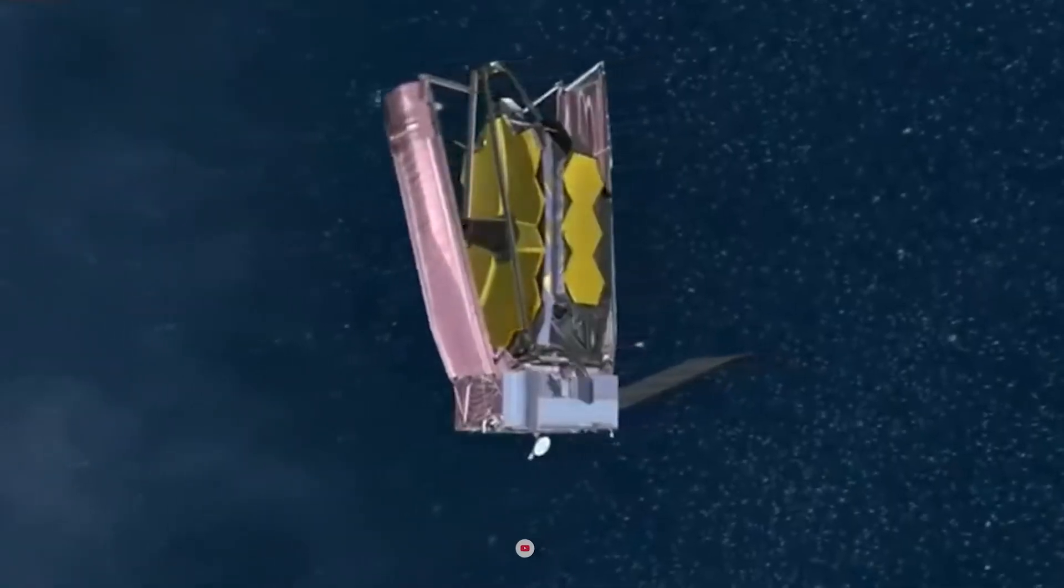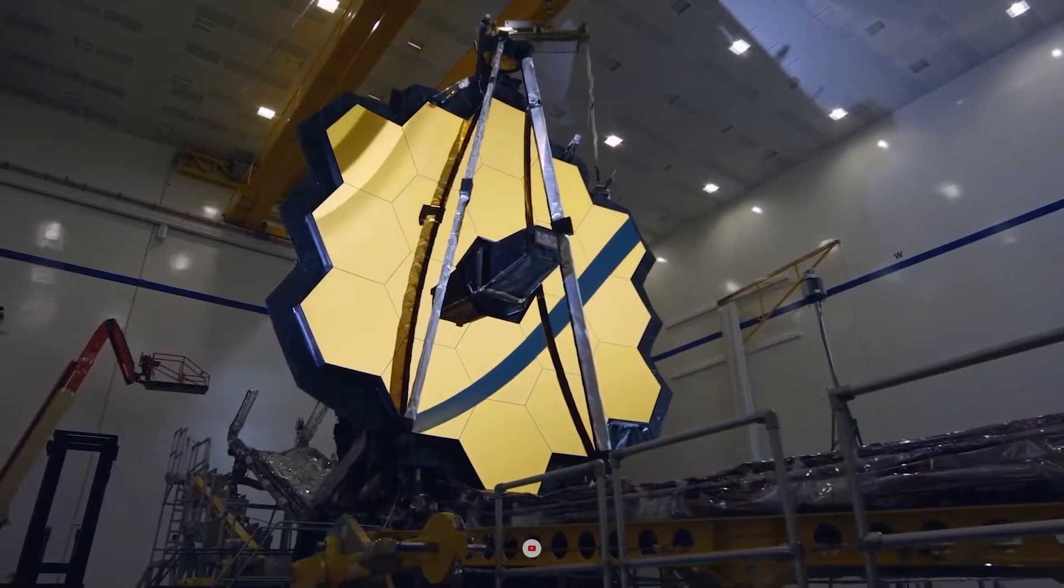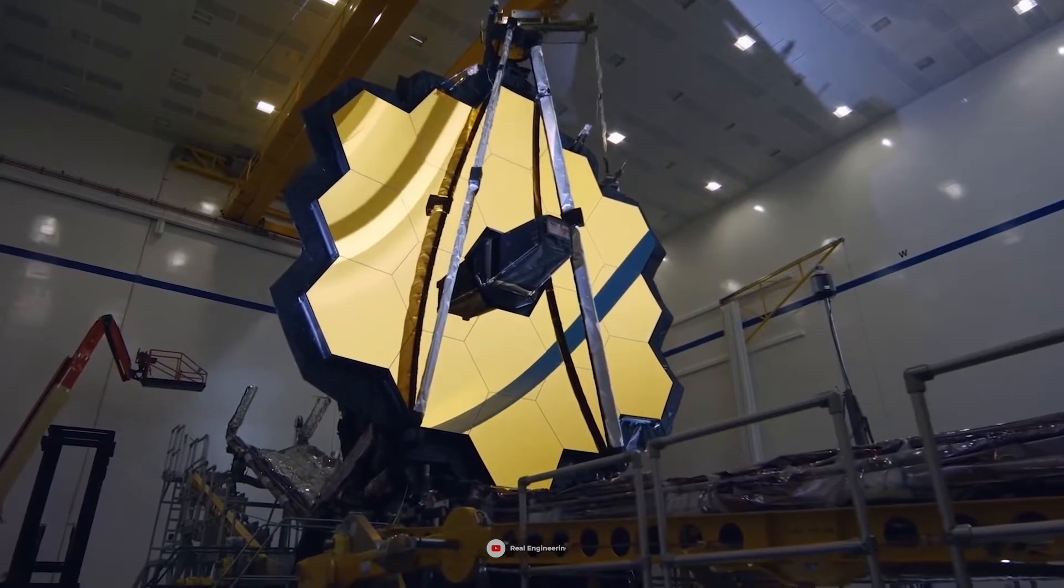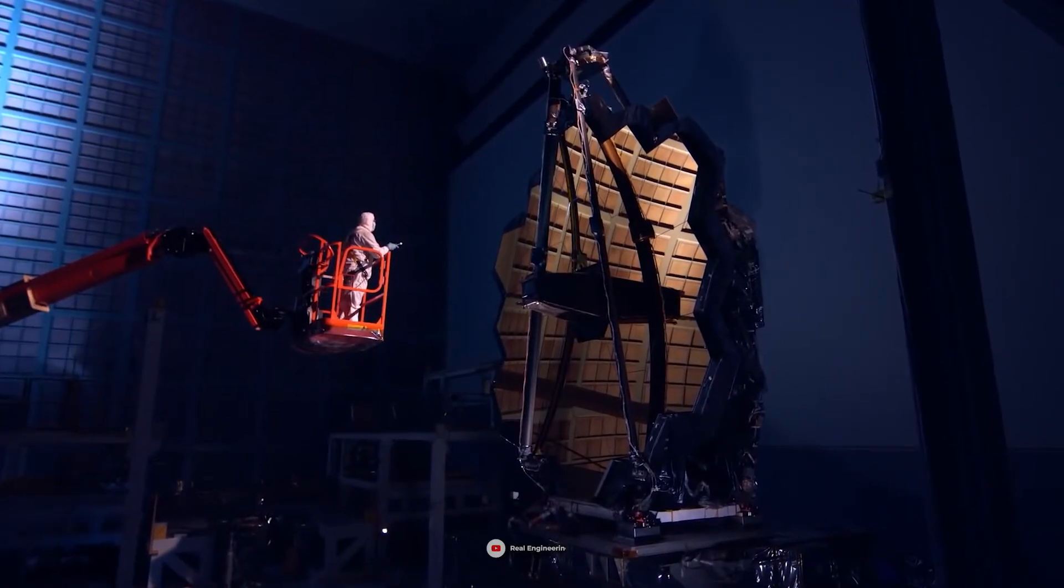The James Webb Telescope sees the universe primarily in infrared light. That sensitivity will also help it directly observe alien worlds, though nobody could have planned to use the telescope for this purpose when it was designed.